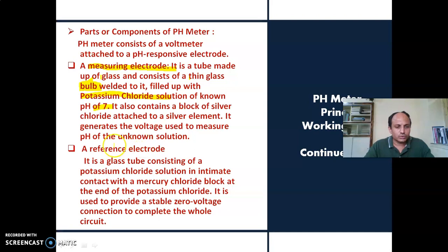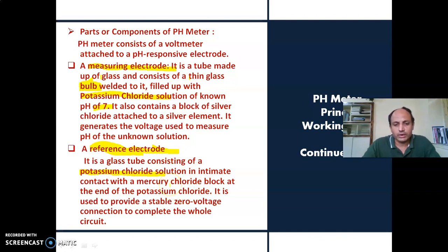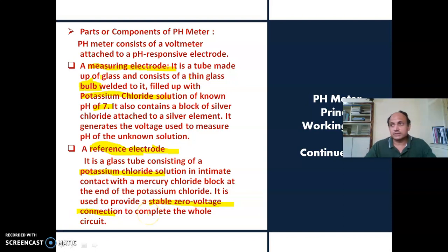The second electrode of the pH meter is the reference electrode. This reference electrode is also a glass tube which consists of a potassium chloride solution, and it is in contact with a mercury chloride block present at the end of the potassium chloride. This reference electrode is used to provide a stable zero voltage connection, because of which a complete circuit is powered.